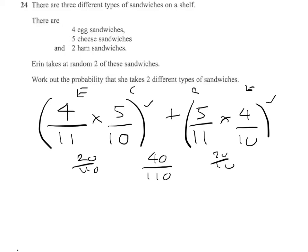Now that's the egg-cheese combination. We could have egg and ham. So egg and ham would be four from eleven times two from ten. And remember, there's going to be two ways of doing it. So that combination is going to give me sixteen from 110.